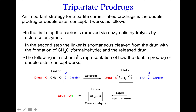One linker that can be used is a CH₂-O group. Once the carrier is released, it will form formaldehyde. Formaldehyde is an organic compound, but the concentration at which it is formed through this linker approach is so low that it doesn't cause toxic or side effects in the human body. The linker is then spontaneously removed, releasing the active drug.